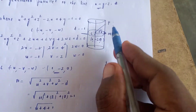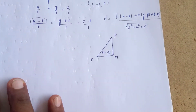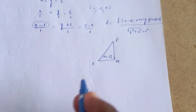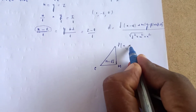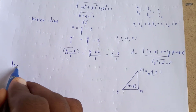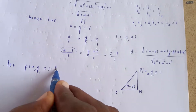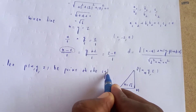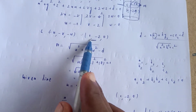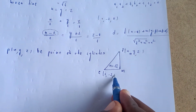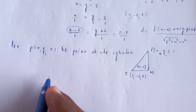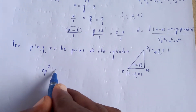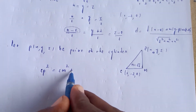The center is 1 comma minus 2 comma 0, and the radius is root 6. Let P be the point x, y, z on the cylinder. The center point M is 1 comma minus 2 comma 0. Using the right angle triangle, CP squared equals CM squared plus PM squared. The formula for PM is the projection of CM onto CP.